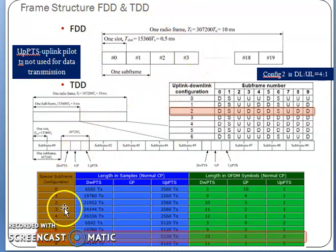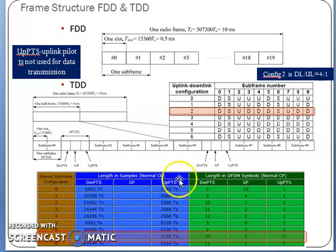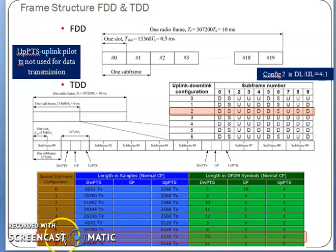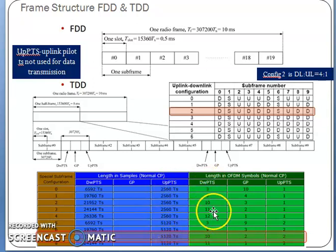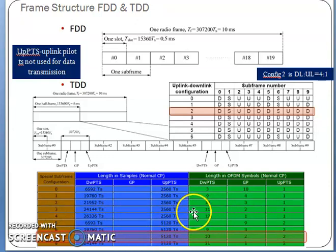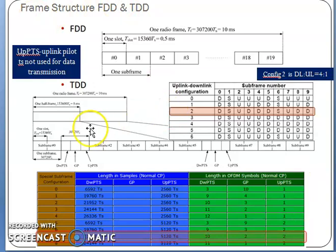Special subframe configurations: the total number of special subframes is 0 through 8. DwPTS and UpPTS have a guard period between them. For normal CP with special subframe configuration 7, DwPTS is 21,952 Ts and UpPTS is 5120 Ts. For configuration 4, DwPTS is 10 symbols and guard period is 2 symbols. You can adjust the guard period based on how many bits you want to add.